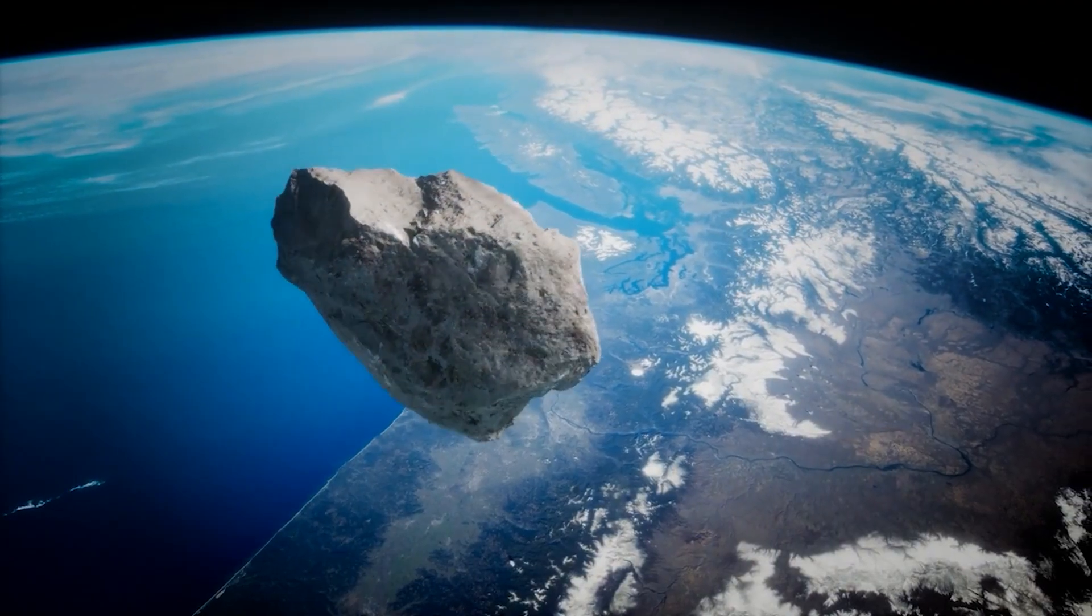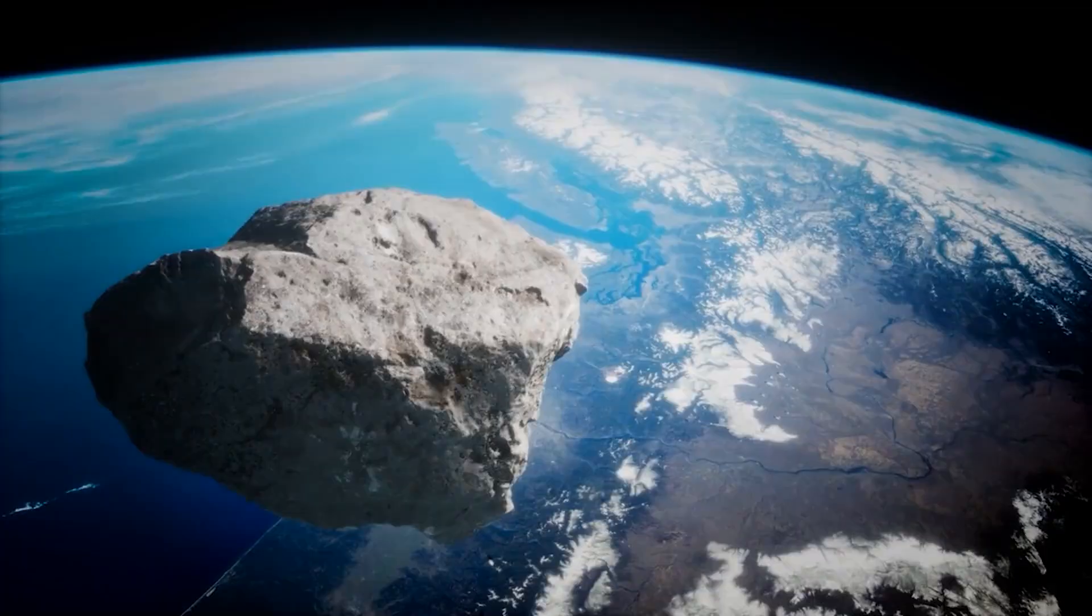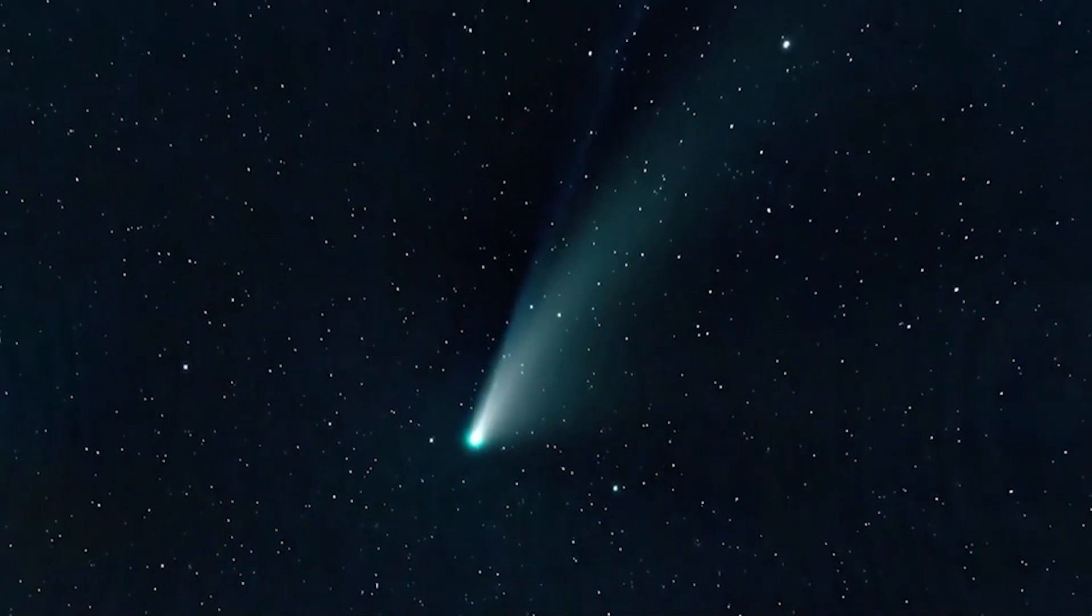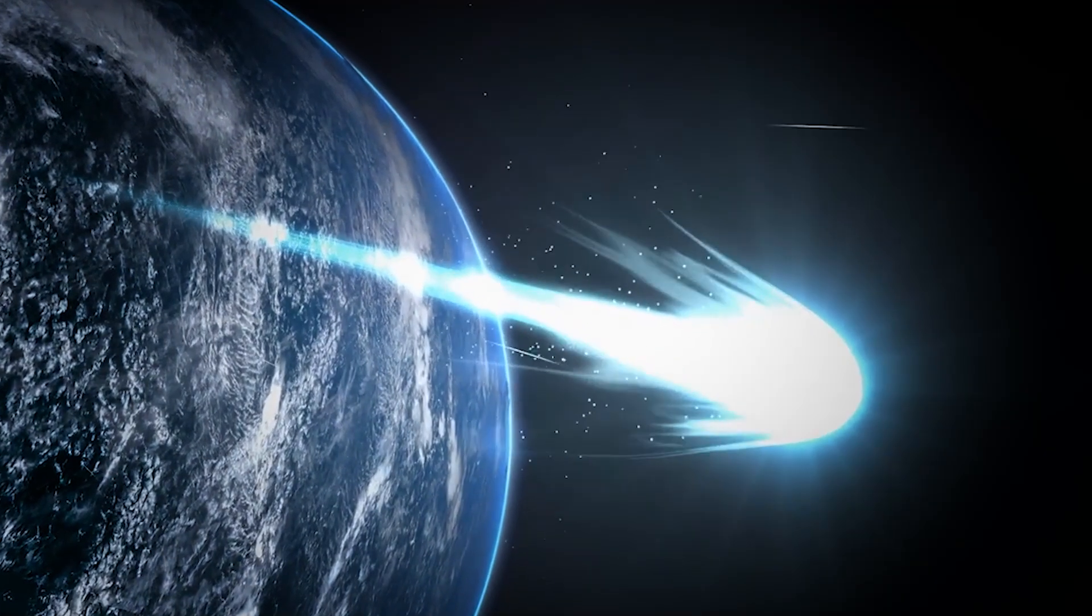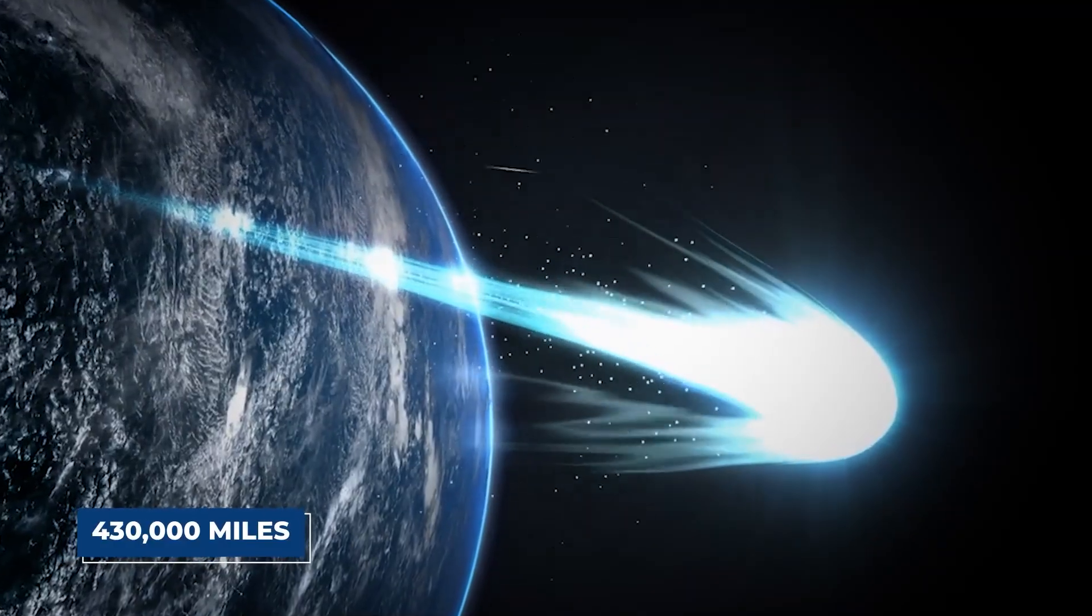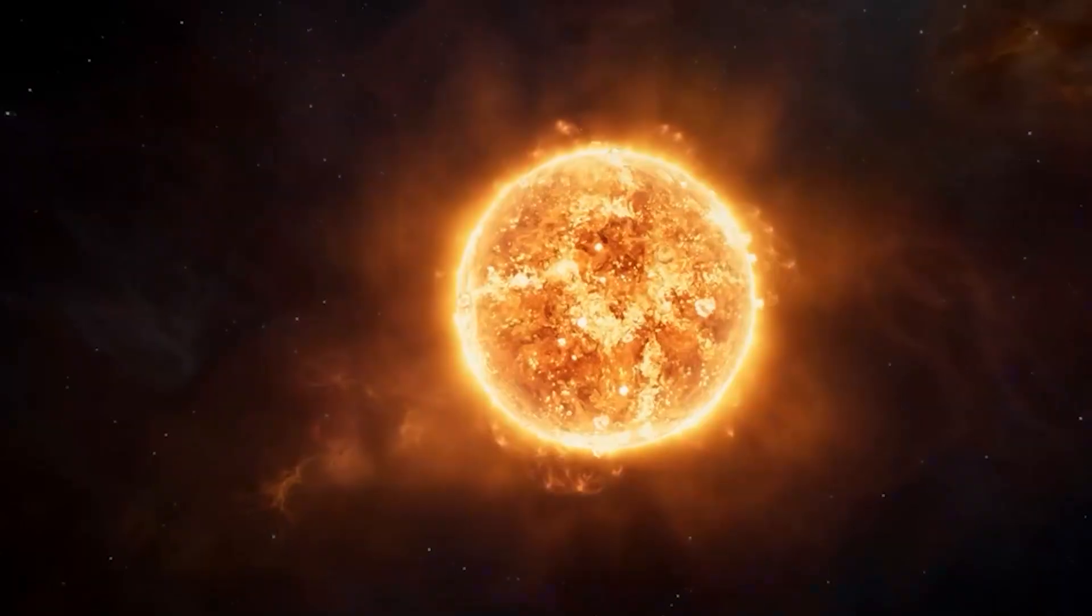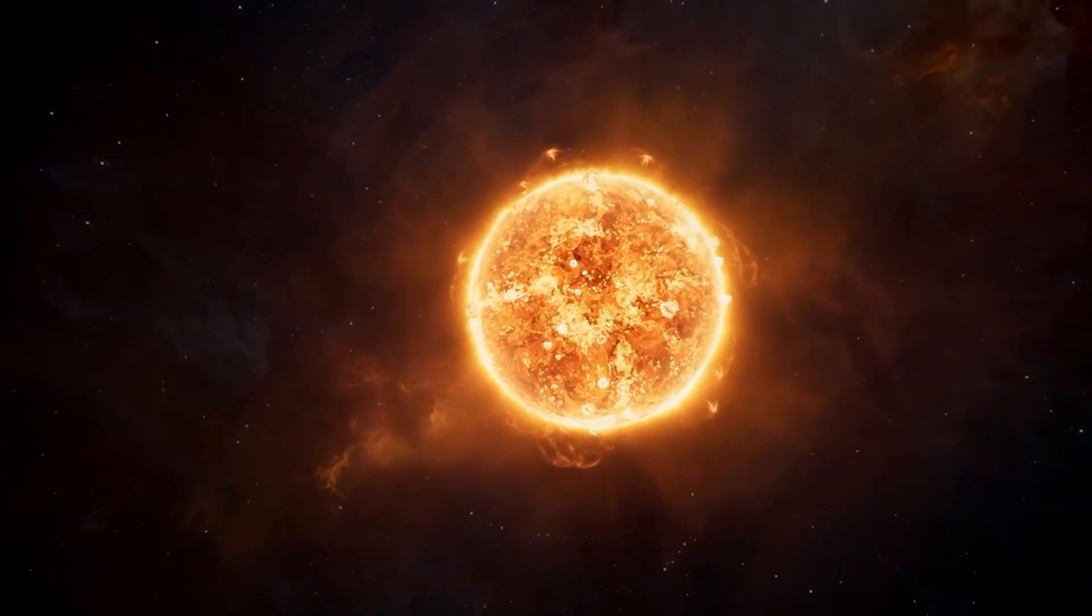What many overlooked when it was first discovered is its sheer scale. The core object itself is hidden, but it has generated a colossal cloud of gas and dust that is staggering in size. Measurements put this dusty plasma cloud at over 430,000 miles in diameter. That's more than half the diameter of our own sun.